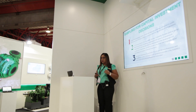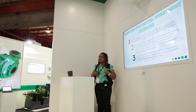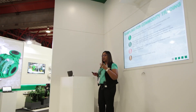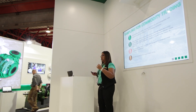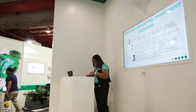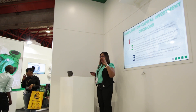When doing capital investment — when you're trying to fund a project or you have a brownfields application on an existing process plant — you need reliable sampling in place to justify to management expanding or optimizing the plant. Your sampling is critical for capital investment decisions. When there's no plant or mine existing, that's a scoping study. For scoping studies, pre-feasibility and feasibility studies, sampling is used on geological drilling core samples. You do a mineralogy study, test work, and then develop your flow sheet for the mine and process plant. The drill cores are essential to sampling and your plant is built.